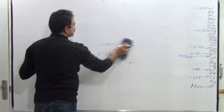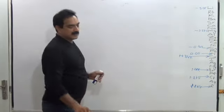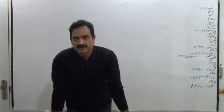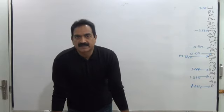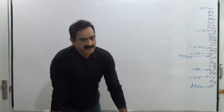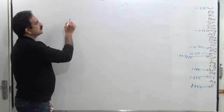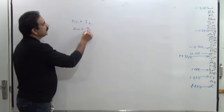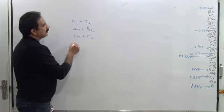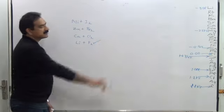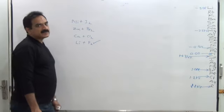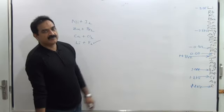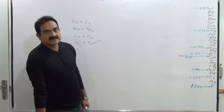The next application: greater the difference between E0 values of two reacting species, faster is the reaction rate. For example, comparing nickel + iodine, zinc + bromine, calcium + chlorine, and lithium + fluorine — the couple lithium + fluorine shows the fastest reaction rate because they have the greatest difference in E0 values. Also, faster the reaction rate, greater is the amount of heat released.